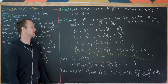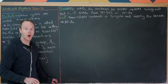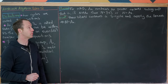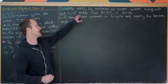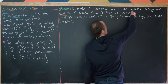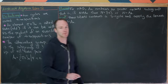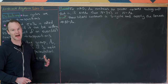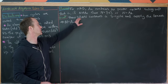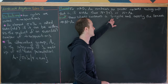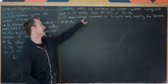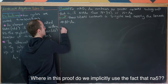Since the 3-cycles generate An, everything inside An is inside N. But N is a subgroup of An, so N equals An. That completes the lemma. Now we're ready for the main result: for n≥5, An contains no proper normal subgroup — that is, if N is a normal subgroup of An then N is either the trivial subgroup or the whole group An.